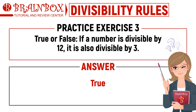The statement is true. If we have identified a number to be divisible by a certain divisor, then that number will also be divisible by that divisor's factors. For example, if a number has 6 as a factor, then it will also be divisible by 2 and 3. We must remember, however, that the converse is not true — just because a number is divisible by 3 does not automatically mean it is divisible by 6 or 9.